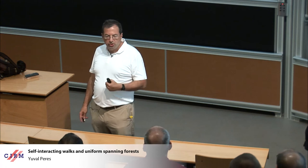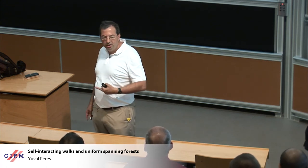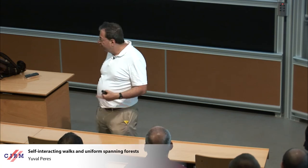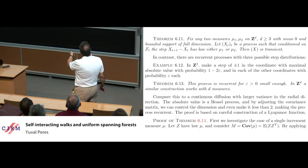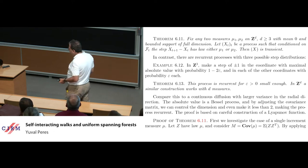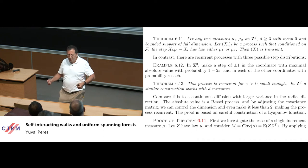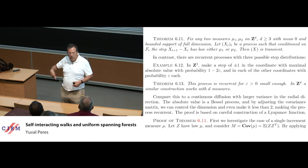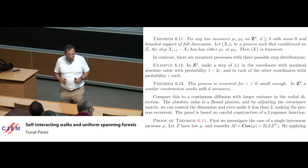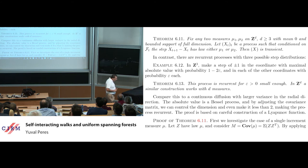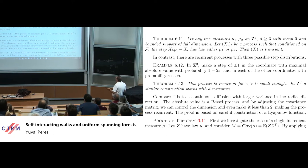This is false with three measures: with three measures in three dimensions you can make it recurrent. For example, in Z³, look at the coordinate largest in absolute value and walk ±1 with high probability 1−2ε, while in the other two coordinates you walk with small probability ε each. For small enough ε this walk will be recurrent in three dimensions. This is proved in the paper in the Brazilian Journal of Mathematics.